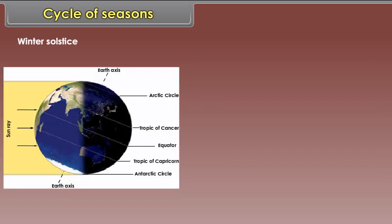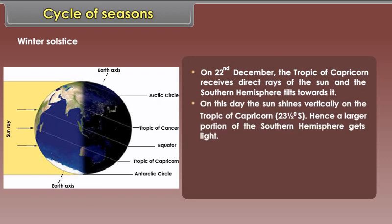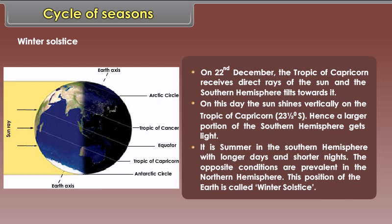Winter solstice. On 22nd December, the Tropic of Capricorn receives direct rays of the sun and the Southern Hemisphere tilts towards it. On this day, the sun shines vertically on the Tropic of Capricorn, 23 and a half degrees South. Hence, a larger portion of the Southern Hemisphere gets light. It is summer in the Southern Hemisphere with longer days and shorter nights. The opposite conditions are prevalent in the Northern Hemisphere. This position of the earth is called winter solstice.